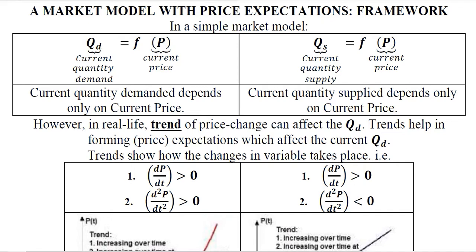In the usual market model, we assume that the current price is the only determinant of quantity demanded and quantity supplied. However, in the real world we can extend this analysis to price expectations and their effect on demand and supply functions. In this series of four videos, we will develop the framework, solve it, discuss possible cases, and finally solve it numerically. This first video focuses on building the framework.